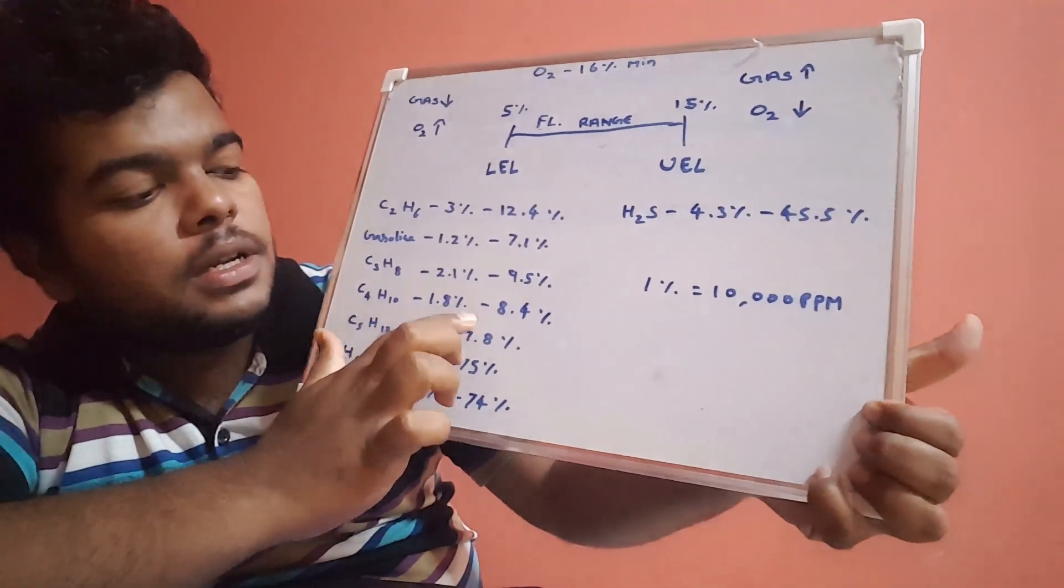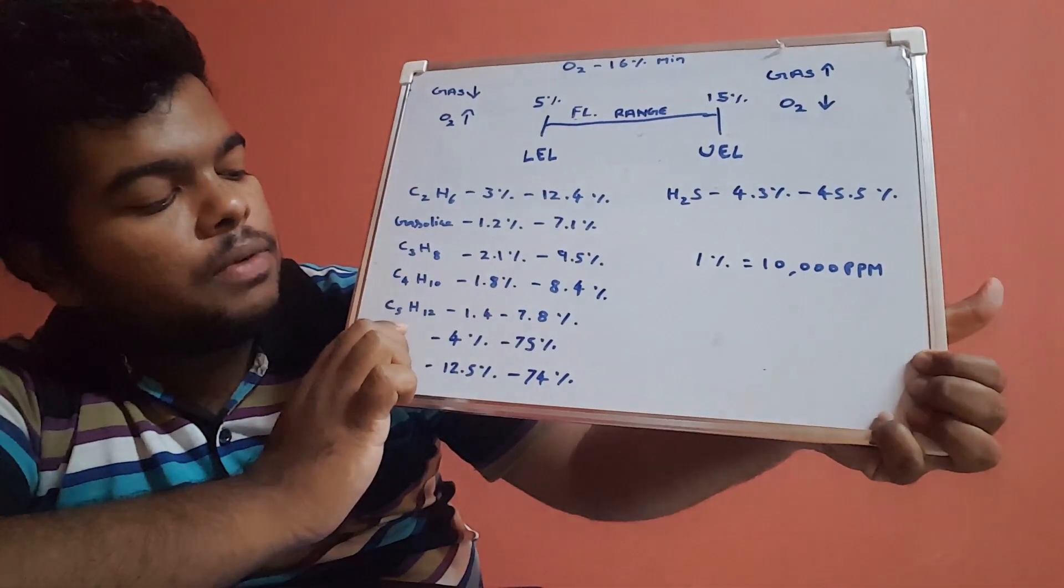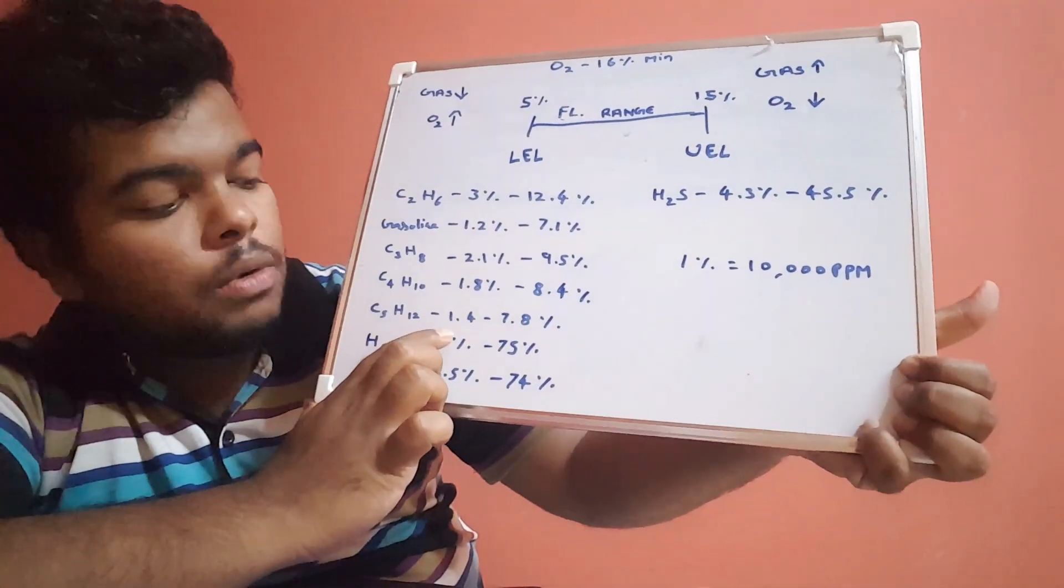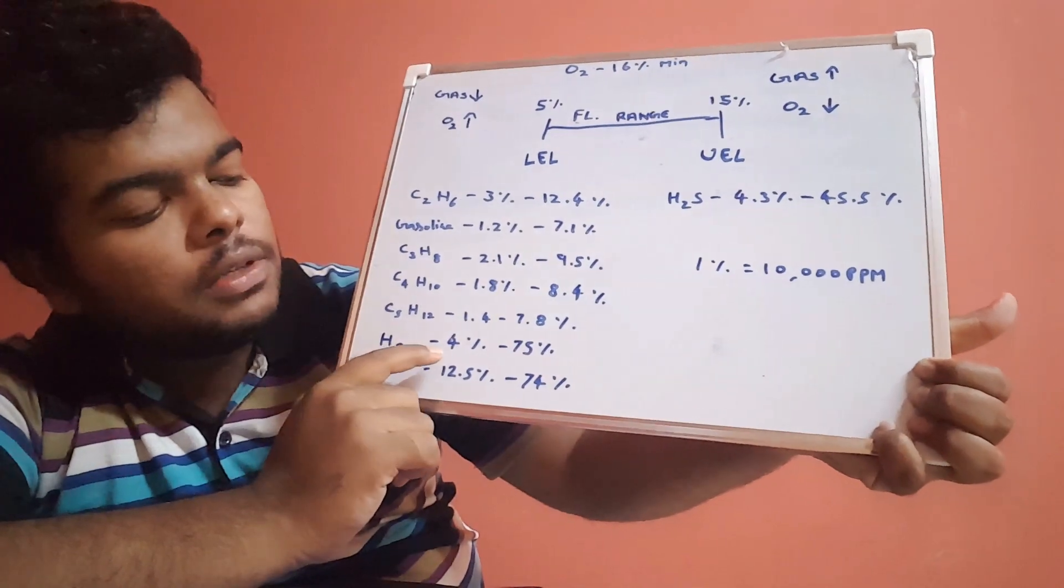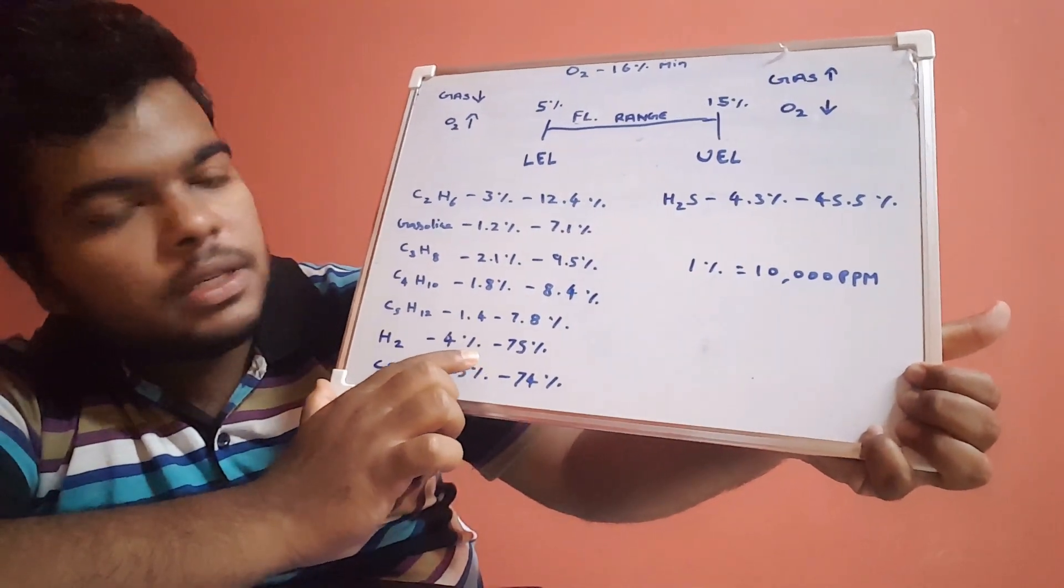C4H10 is butane, which has 1.4 percentage to 7.8 percentage. H2 is hydrogen, which has 4 percentage to 75 percentage LEL and UEL.